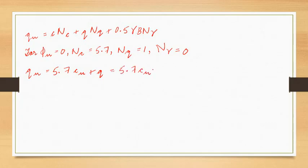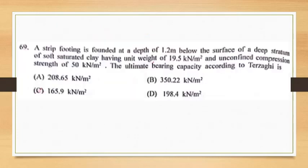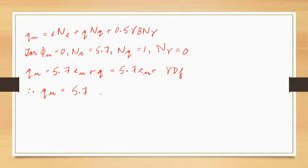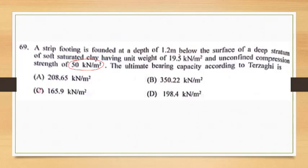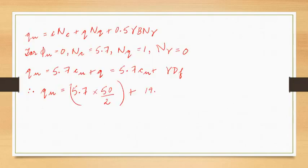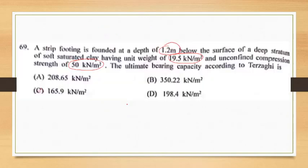Here q is the overburden pressure, written as γ × D_f. The unconfined compression strength is 50 kN/m², so c_u = 50/2 = 25 kN/m². γ = 19.5 kN/m³ and D_f = 1.2 m. Therefore q_u = 5.7 × 25 + 19.5 × 1.2 = 142.5 + 23.4 = 165.9 kN/m². The answer is option C, that is 165.9 kN/m².